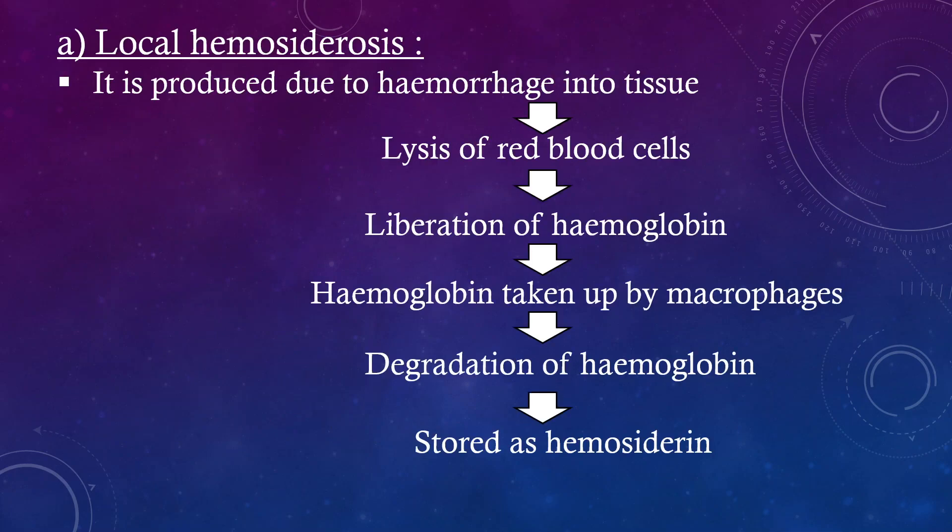Types: Local Hemosiderosis. It is produced due to hemorrhage into tissue, followed by lysis of red cells, followed by liberation of hemoglobin, followed by hemoglobin taken up by macrophages, followed by degradation of hemoglobin, resulting in formation of hemosiderin.